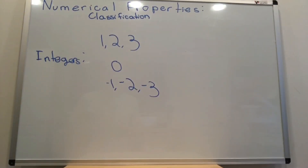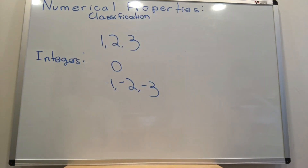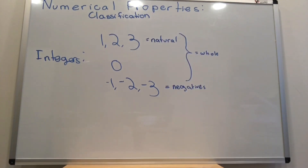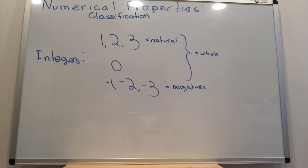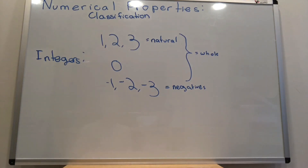As you probably already know, the integers are all numbers with no decimal expansion after them. These include positives like 1, 2, and 3; zero; and negatives like negative 1, negative 2, and negative 3. Positive integers are called the natural numbers — they're the counting numbers that you learn first: 1, 2, 3, 4. Whole numbers include all of the counting numbers as well as 0. And negative integers are simply the negative counterparts of all the natural numbers.